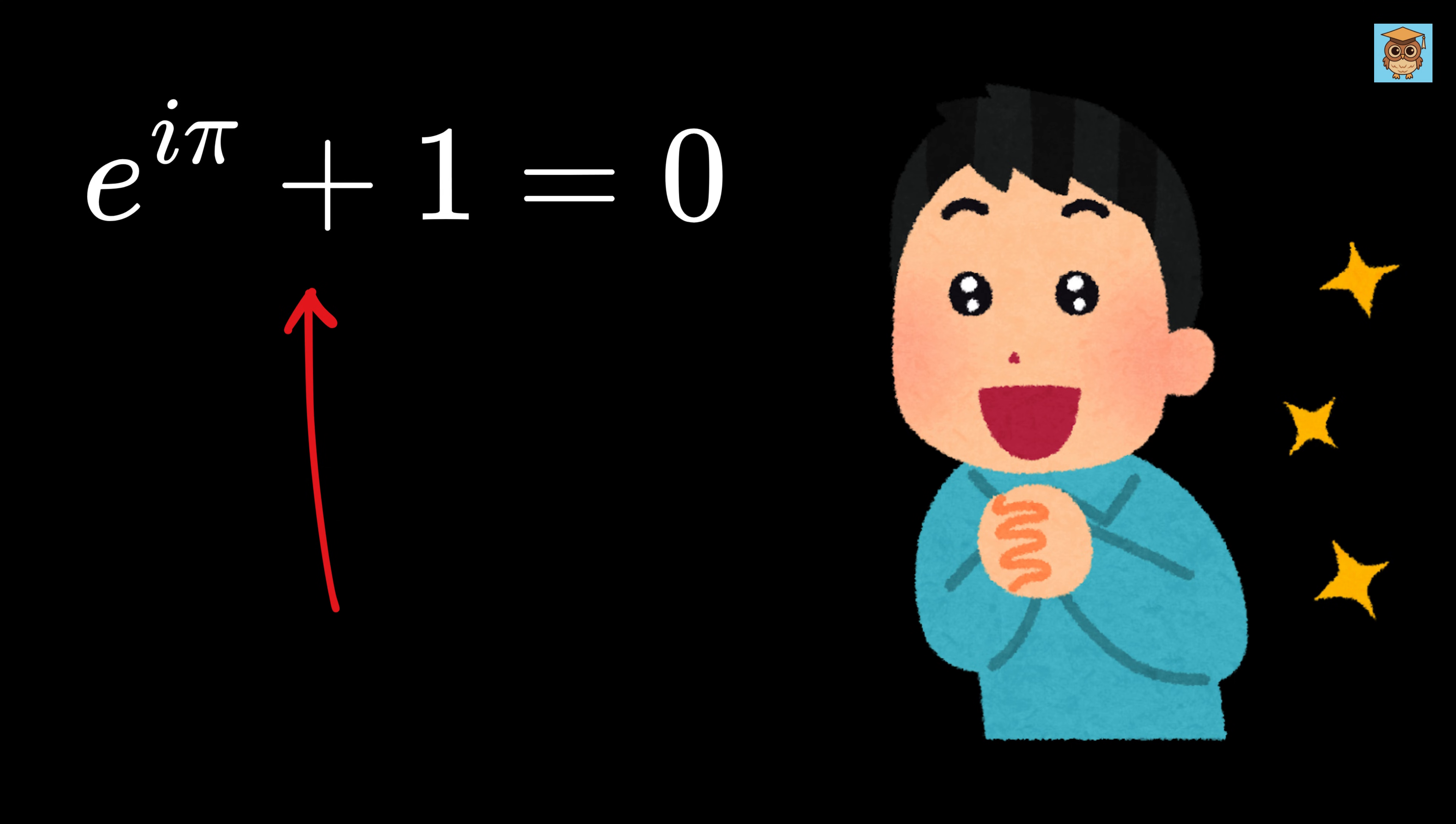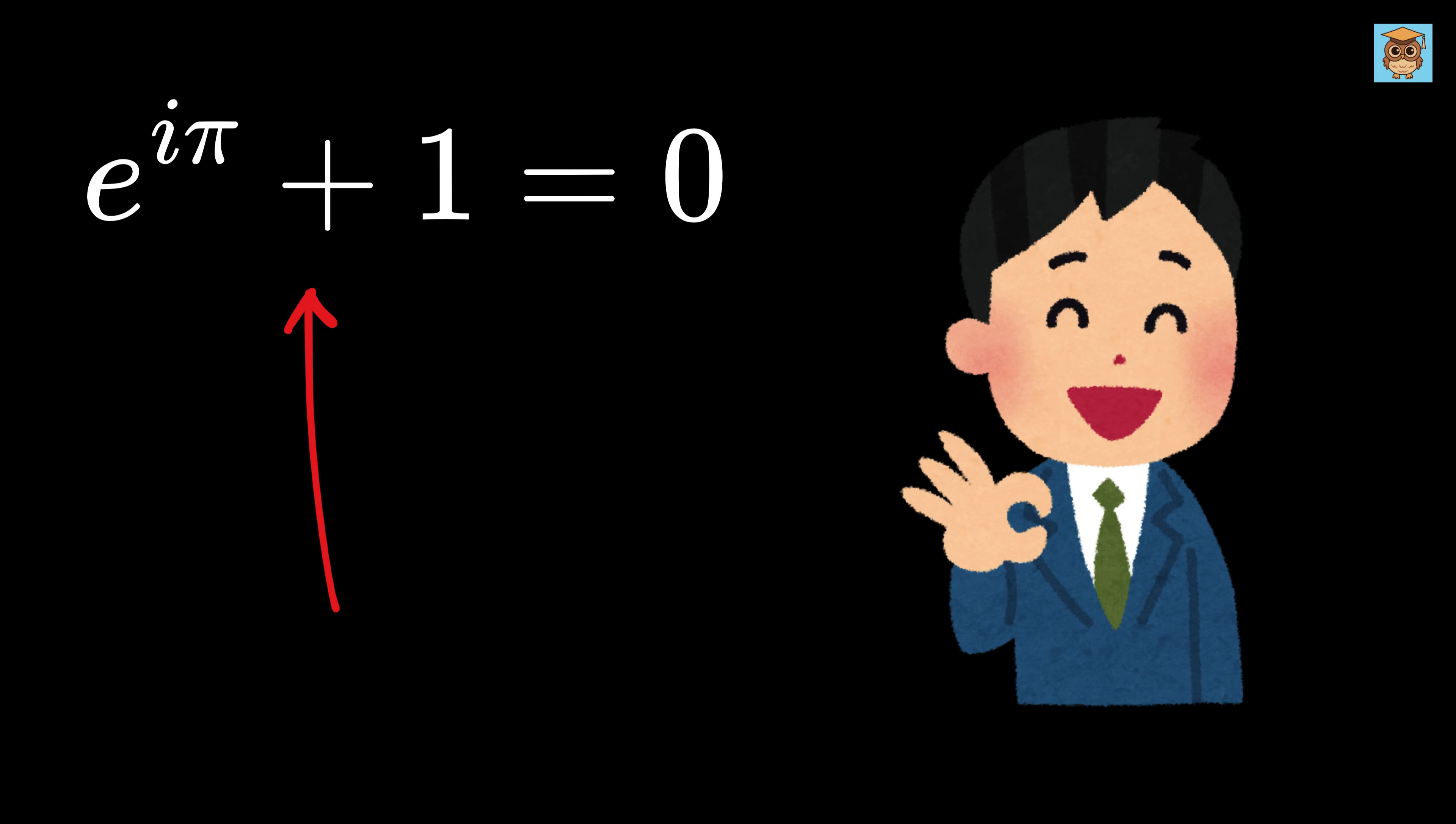You might have heard about this wonderful transcendental equation e to the iπ plus 1 equals 0. This equation is beautiful because it elegantly connects five of the most fundamental numbers in mathematics.